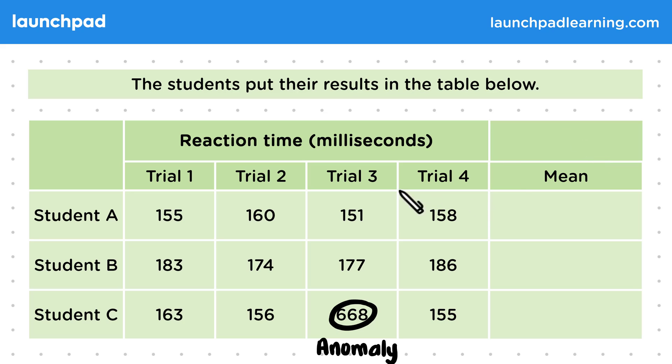Remember, when you're calculating a mean, you add up all of the values, then divide by how many there are. So we're going to add up all of these and divide by four. The mean reaction time for student A was 156 milliseconds.